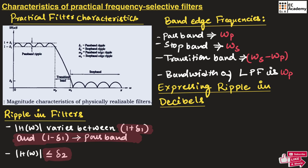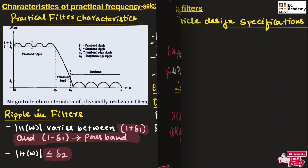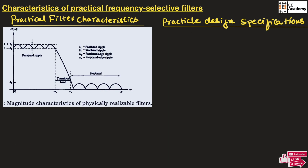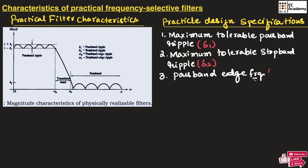To handle the large range of values in filter response, we use a logarithmic scale in terms of decibels. We can represent the ripples in the form of decibels. The ripple in pass band can be given as 20 log base 10 of delta 1, expressed in decibels. Whenever we design a filter practically, we must specify: the maximum tolerable pass band ripple delta 1, the maximum tolerable stop band ripple delta 2, pass band edge frequency omega p, and stop band edge frequency omega s. These four parameters fully define the filter design problem.